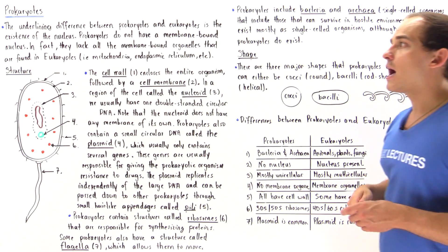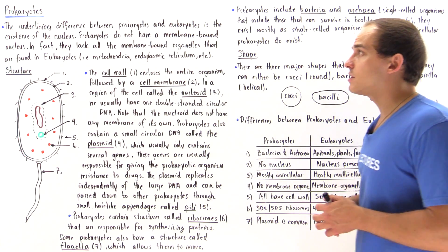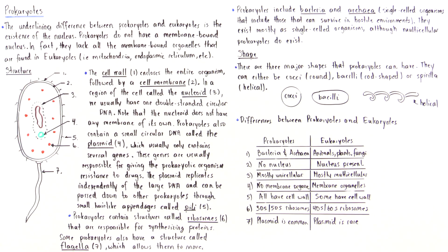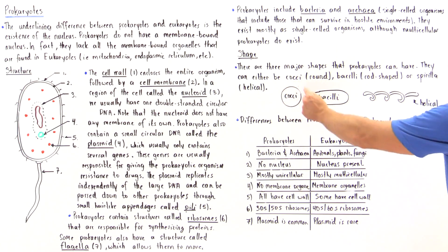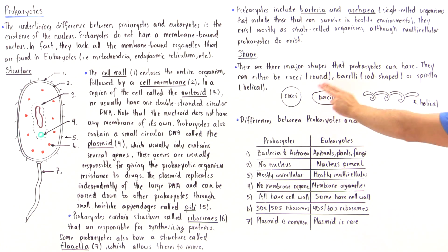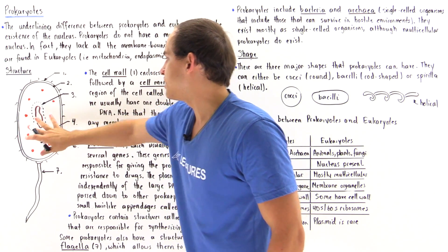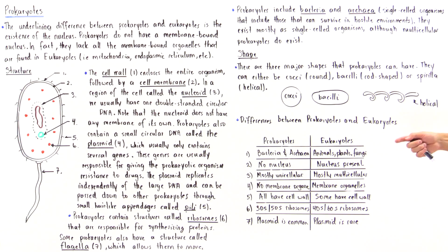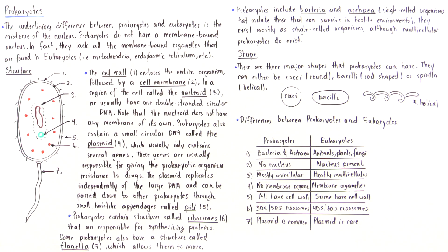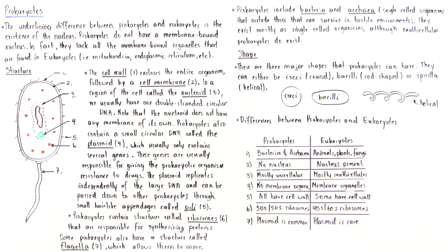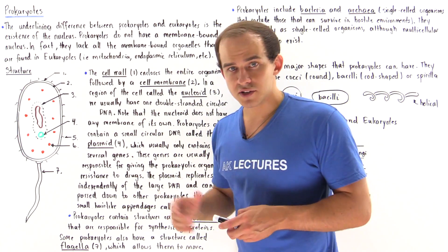There are three major shapes that prokaryotic organisms can have. They can be round, which is our cocci — cocci means we have a round shape. We can have our bacilli, which is a rod-like shape, as drawn in the diagram. And we can also have a spiral-like or helical shape known as the spirilla. So the spirilla, the bacilli, and the cocci are the different types of shapes that our prokaryotic organisms can take.